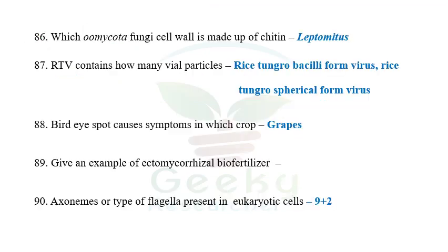The next question: which oomycota fungi have a cell wall made up of chitin? Leptomitus is a fungus that comes under oomycota. We know that almost all fungal cell walls are made up of chitin, but oomycota cell walls are made up of cellulose and hydroxyproline. However, a few oomycota fungi — Achyla, Apodachlya, Saprolegnia, and Leptomitus — have cell walls made up of chitin even though they belong to oomycota.